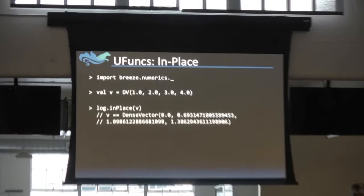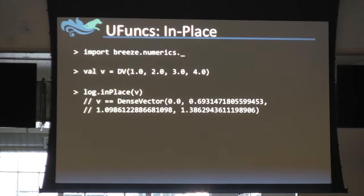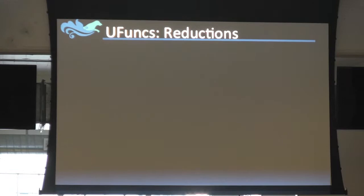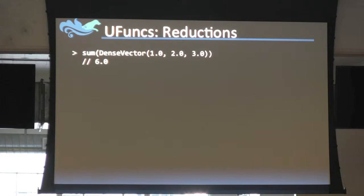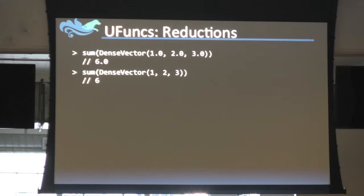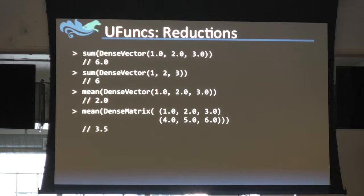In tight inner loops you don't want to create new objects, so we also support a syntax where we say log.inPlace and it mutates the underlying vector, reusing memory. We also have ufuncs that are more reduction oriented. For instance, we can take the sum of a dense vector — sums work for both floating point numbers and integers, and also for any data type you want to add like complex numbers or quaternions. We can do means, and of course it works on dense matrices just like before.